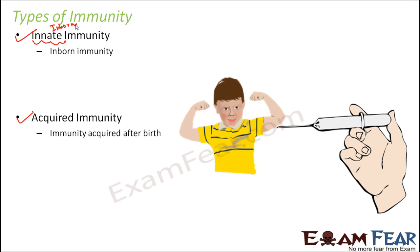The other type is acquired immunity — immunity which is acquired after birth. In acquired immunity, certain substances are introduced inside the body which provide immunity. This immunity is not present by birth; it comes into the body only later in life, whereas innate immunity is present from birth.